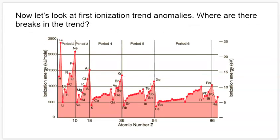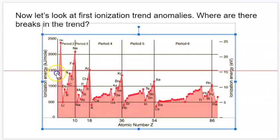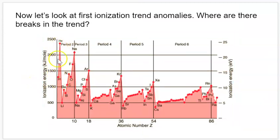Now let's look at first ionization energy trends. Ionization energy refers to pulling one electron off of an atom — generally from the valence shell, whichever electron is easiest to pull off. As we go from hydrogen to helium, the first ionization energy is a lot higher because helium has more protons, creating a stronger pull on electrons. The trend for first ionization energy is that the energy required to pull electrons off increases as you go from left to right on the periodic table, due to the nucleus getting stronger with additional protons.